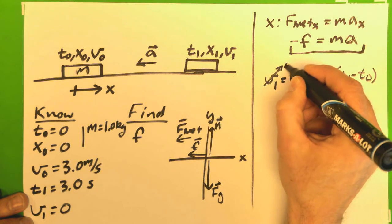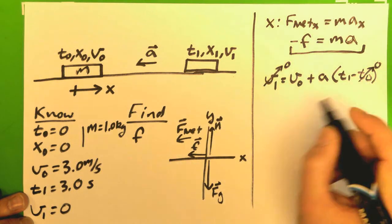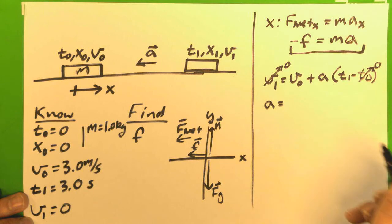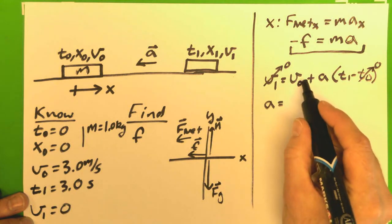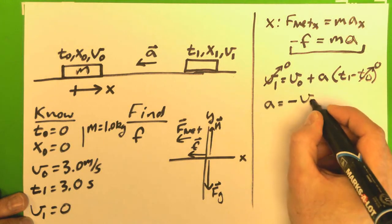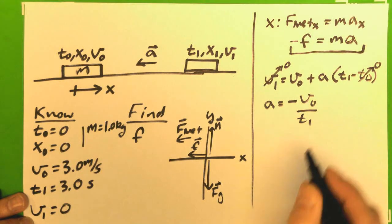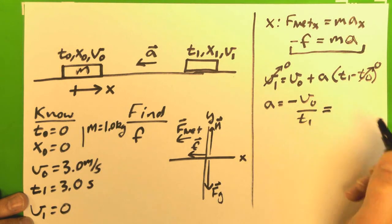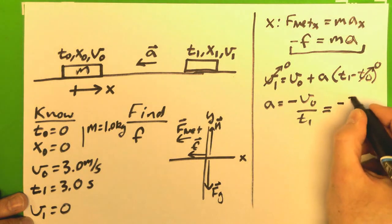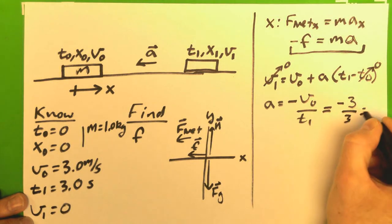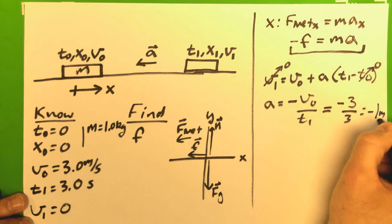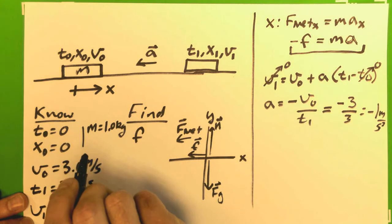Now, in this case, v1 is zero, t0 is zero. So, a is equal to, and I'm going to have to subtract the v0 over, and divide down by the t1, and so I get that. Now, done with the physics, plug in the numbers. I get a negative 3 over 3, giving me a negative 1 meters per second squared.